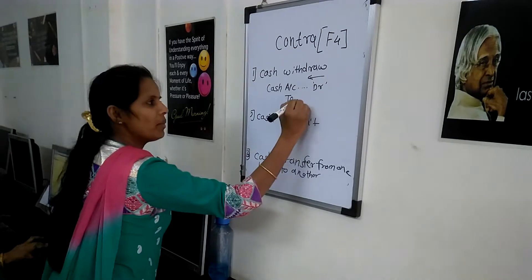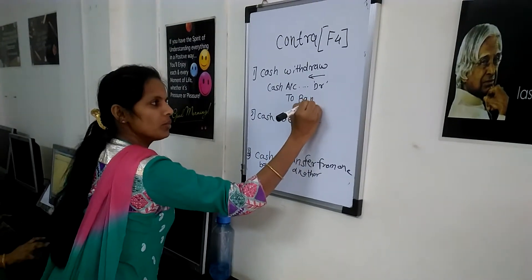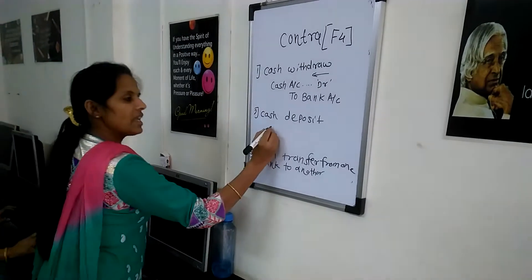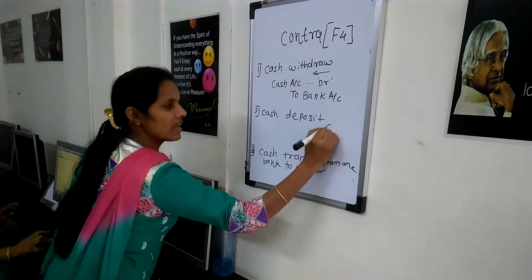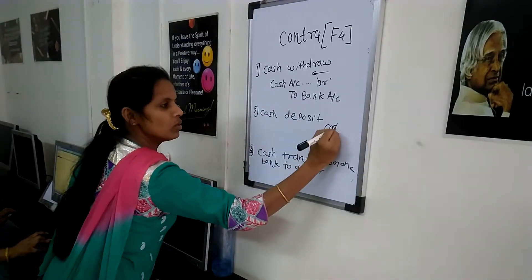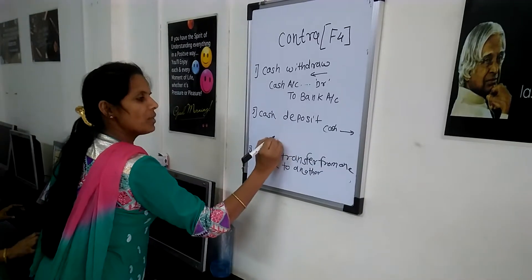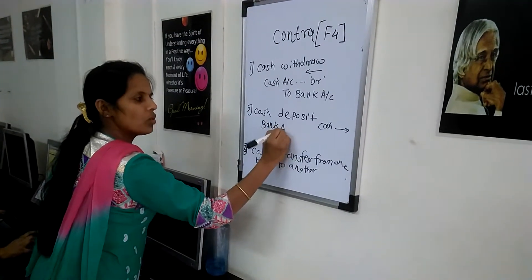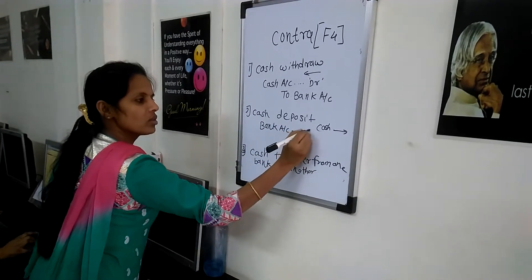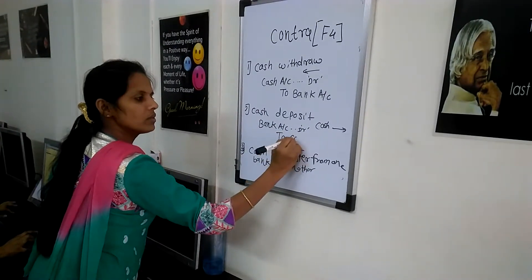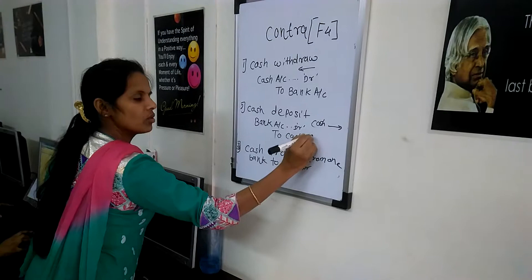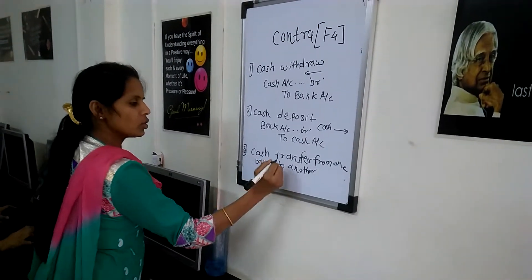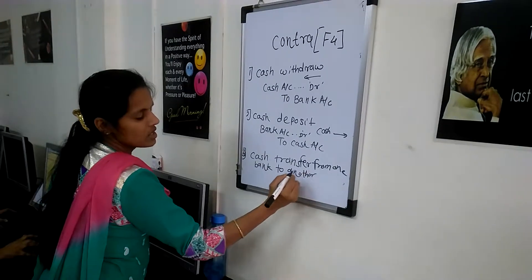Bank is the giver and bank is the balance of the commute. So cash goes out. So bank account debit to cash account. So cash transfer the cash bank account.